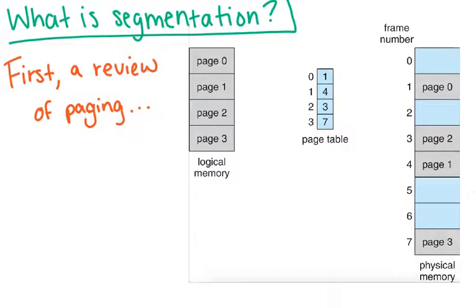First, a quick review on paging from the last video. In paging, we had our logical memory, and all of our processes would be stored with references in this logical memory. We divided this into pages, and these pages were a fixed length. In addition, we also had the physical memory and we separated it into frames, and they had the same size.